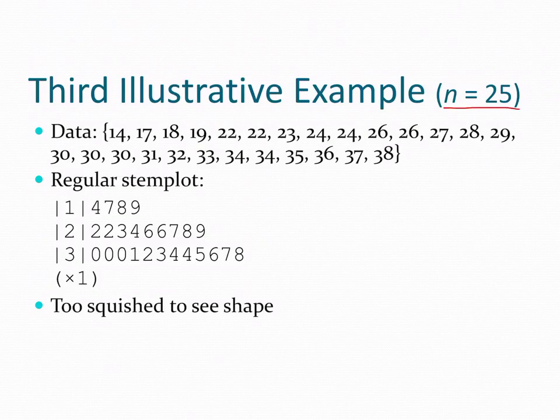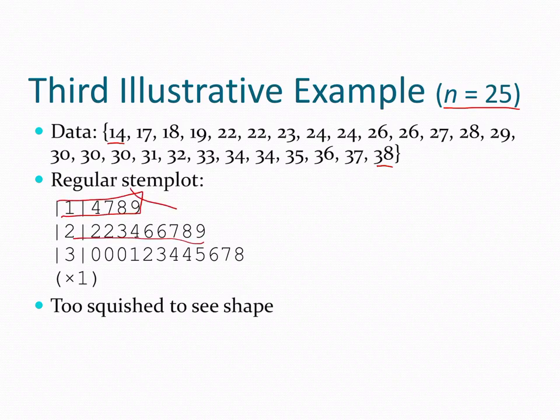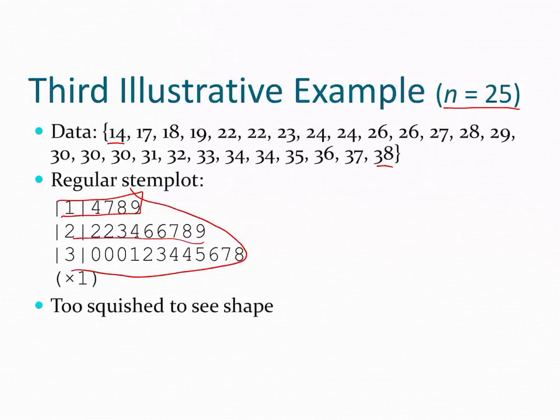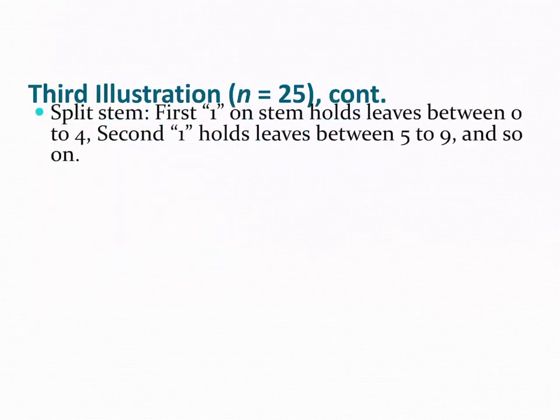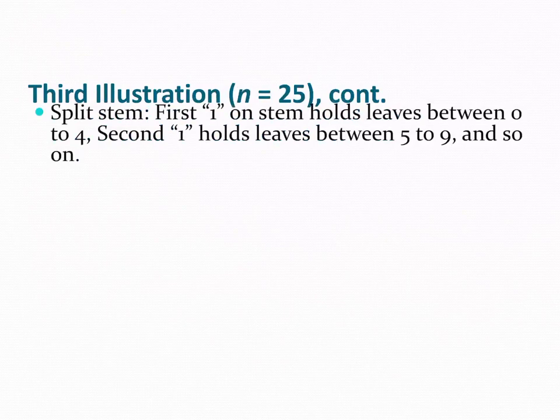So here's the third illustrated example, where we have n equals 25. And here's our data set. As you can see, it's already been ordered for us. We have our low being 14, our high being 38. So for a regular stem plot, how we looked at it, as you can see, when we put everything in here, it's very squished. You can see our silhouette, it's very squished. It's not a great way to see the shape.